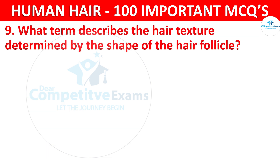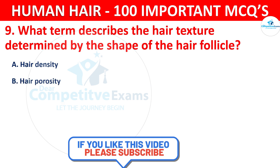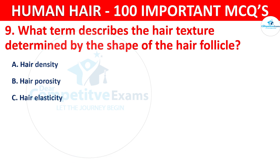Question number 9. What term describes the hair structure determined by the shape of the hair follicle? The options are hair density, hair porosity, hair elasticity, or hair type.